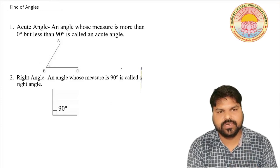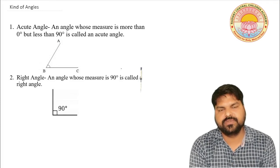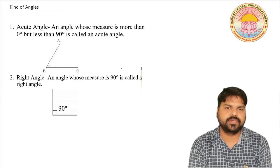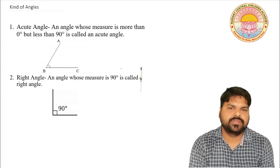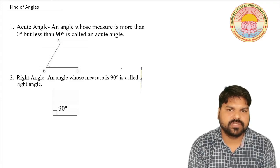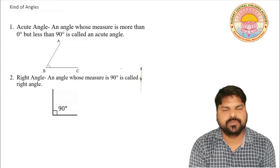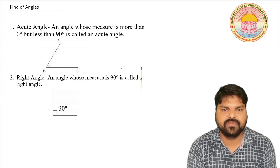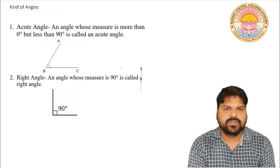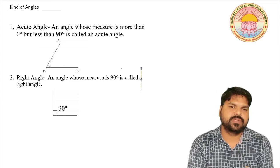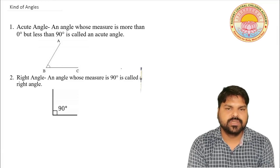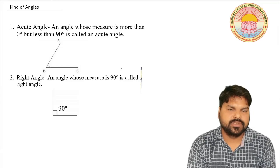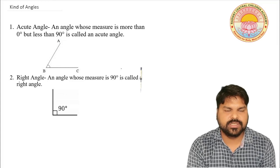As you have noted in previous classes, you have already studied about types of angles — for example, acute angle, right angle, obtuse angle, straight angle, reflex angle, and complete angle. There are six types of angles which you have already studied in previous classes. Let us introduce these angles.